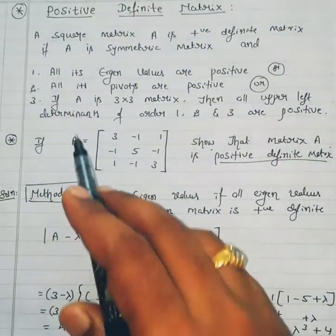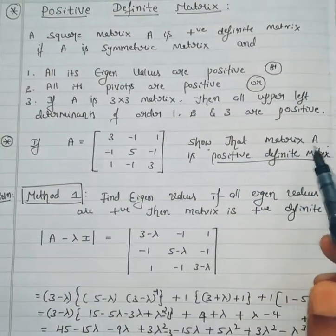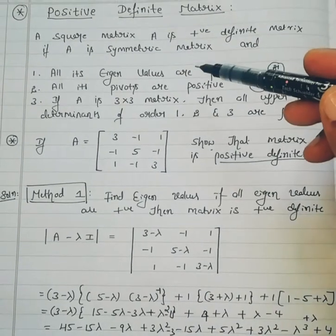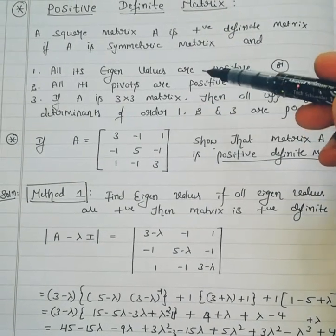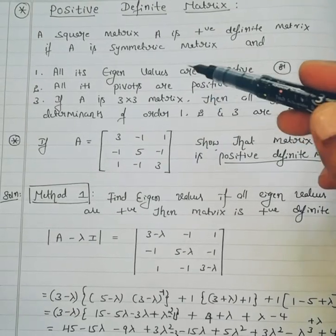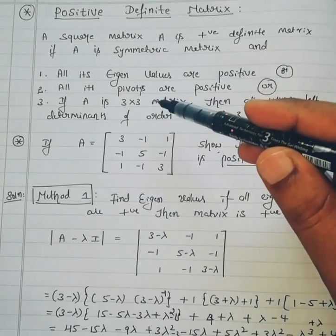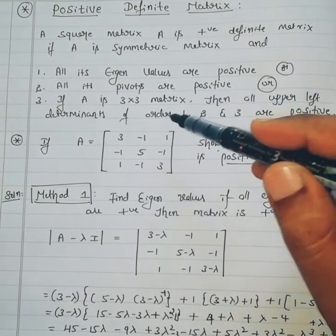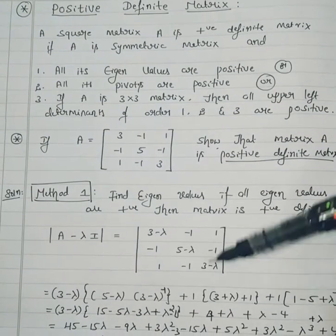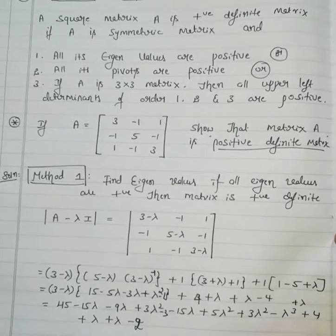I have taken one example. Matrix A is given and we need to show that matrix A is a positive definite matrix. We have three conditions but we have to prove any one condition — either all eigenvalues are positive, all pivots are positive, or the upper left determinants of order 1, 2, 3 are positive. Here I have shown all three, but in the exam you only need to show any one.